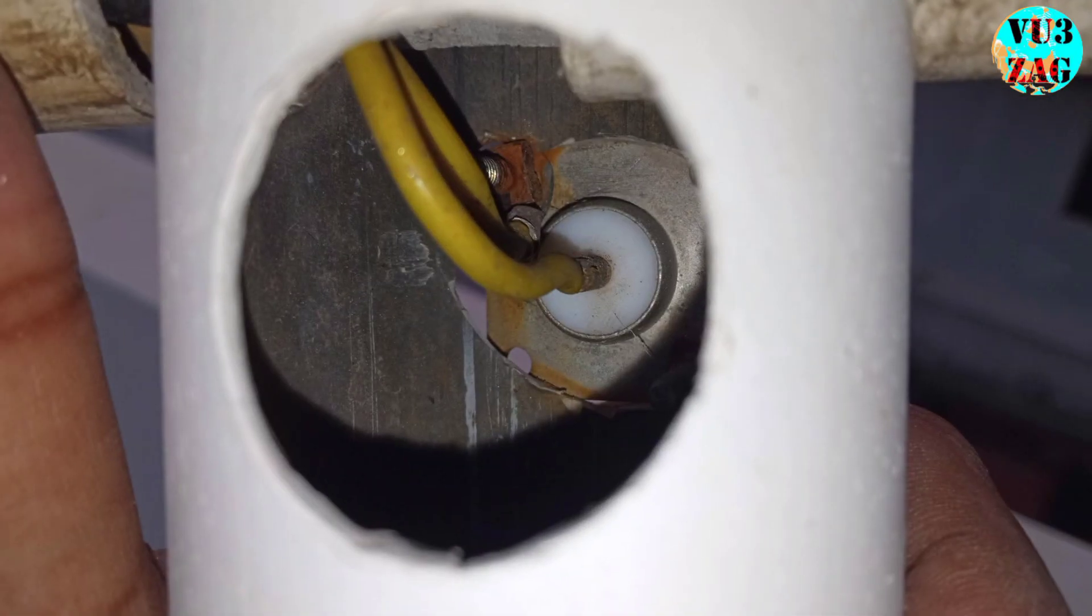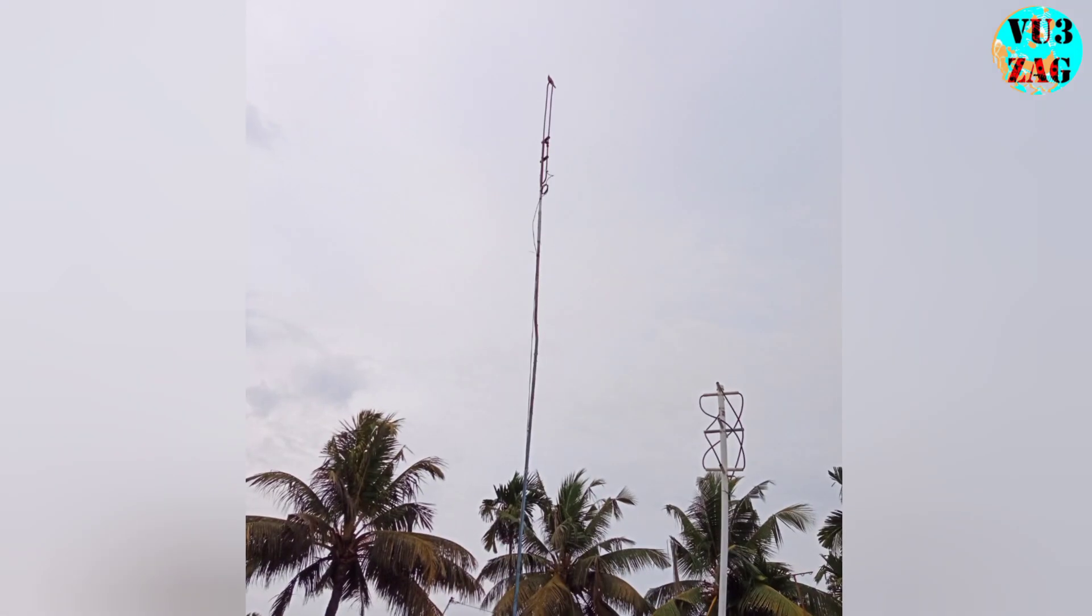An SO239 connector is provided at the bottom part of the QFH antenna so that we can extend the connection towards the radio. Now let's put it to the test. We have set up the coaxial QFH antenna in an open field to showcase its capability in receiving signals regardless of the polarization orientation.